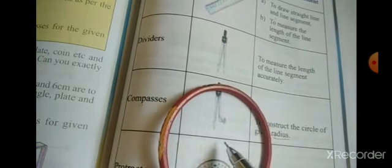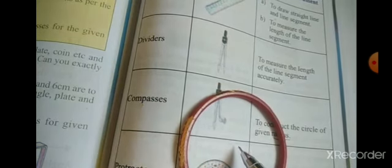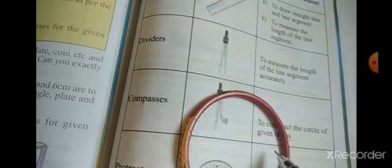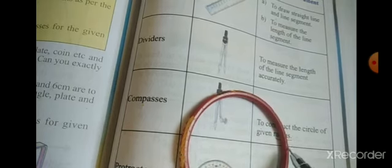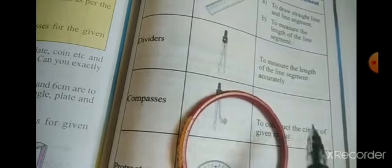This is compass, to construct the circle of the given radius. Yes students, what is the radius? The distance between the center of the circle and all the points, equidistance from a fixed point.